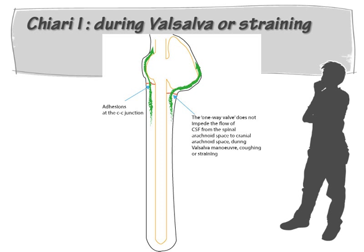During Valsalva maneuver, straining, or coughing, there is an increase in intrathoracic pressure. This pressure is transmitted to the spinal subarachnoid space through the valvus spinal epidural veins. Therefore, during Valsalva maneuver, cough, or straining, there is efflux of CSF from the spinal subarachnoid space into the cranial subarachnoid space across the cranio-cervical junction, without much impediment from this one-way valve that Bernard Williams suggested.